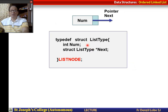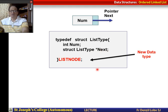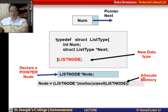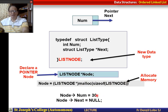Coming back to the basics: how to represent a node of a linked list. We create a new data type called list, which has a data item called number and a link to the next node. It is therefore a structure with list type next as a pointer to the next node. We create a node of pointer data type. Node is a pointer of the list type. We allocate memory to node using malloc, assign 30 to number, and make next equal to null. The pictorial representation shows number is 30 and next points to null.